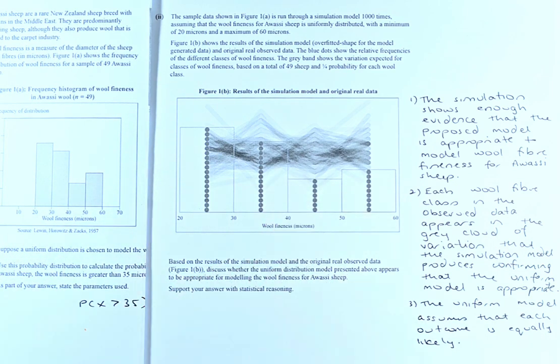Figure 1b, this one here, shows the result of the simulation model. So this is a simulation, the overfitted shape for the model generated data and the original real observed data.